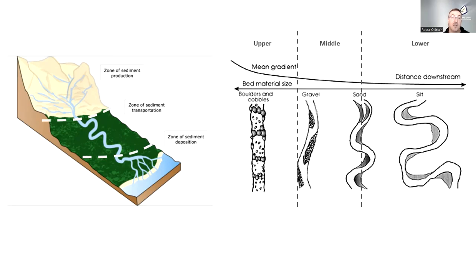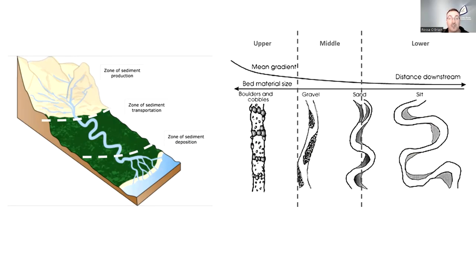In our upper catchment with high gradient, we have channels that are down-cutting with large materials such as boulders and cobbles. As we move downstream into the middle section, the river becomes more sinuous with gravel deposits and gravel bars — this is where we get our typical pool-riffle-glide sequences. Further downstream the river meanders more, with more deposition and finer material. It's also important to note that rivers erode and recruit material on their bends, making an important contribution to bed material.